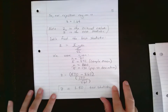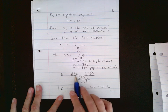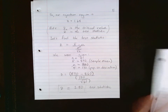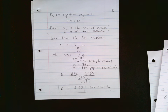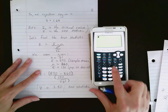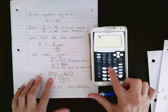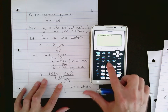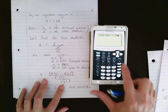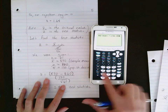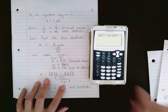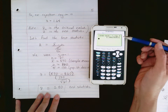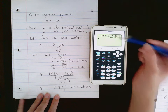We're going to put this in the calculator to get our test statistic. It's 890 minus 860, divided by 130 divided by the square root of 61. You can do this all in one step on the calculator. Type it as: open parentheses, 890 minus 860, close parentheses, divided by, open parentheses, 130 divided by the square root of 61, close parentheses, and hit enter. There is our test statistic: 1.80. Be very careful to watch your parentheses or you'll get the wrong answer.